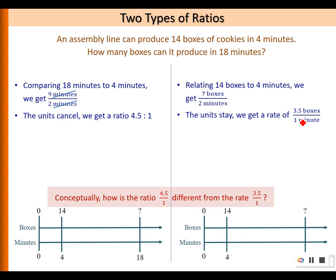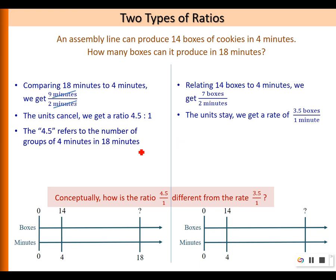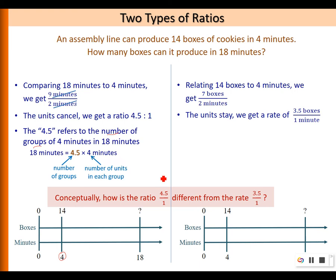Now conceptually, how is the ratio of 4.5 is to 1 different from the rate 3.5 over 1? For the first type of ratio, the 4.5 is actually referring to the number of groups of 4 minutes in 18 minutes. So there are 4.5 groups of 4 minutes in 18 minutes. Whereas the 4 minutes is the number of minutes in each group.